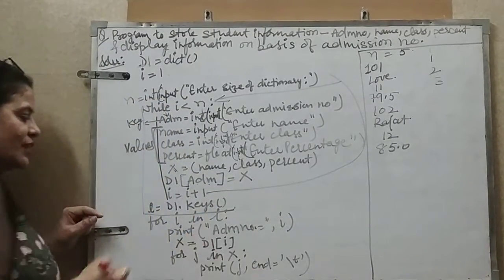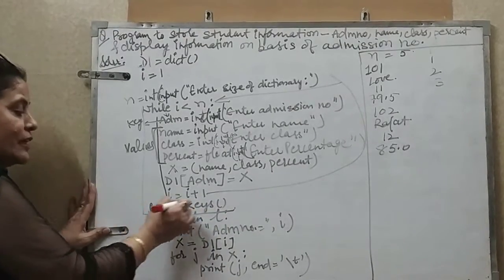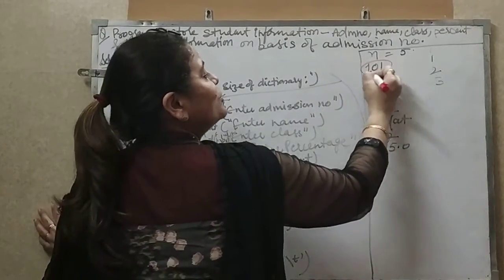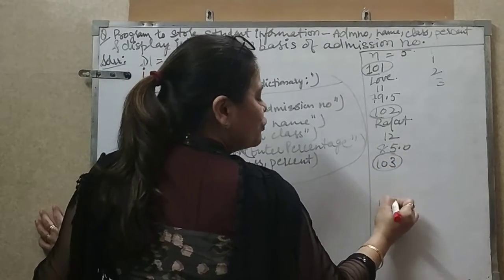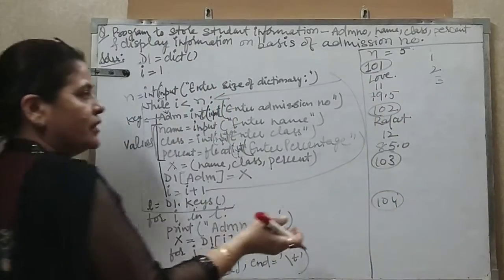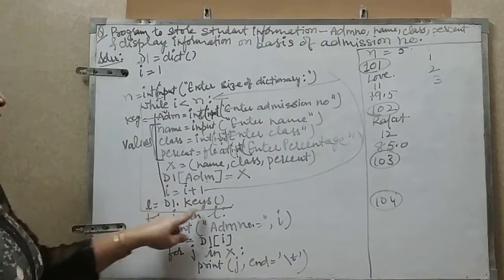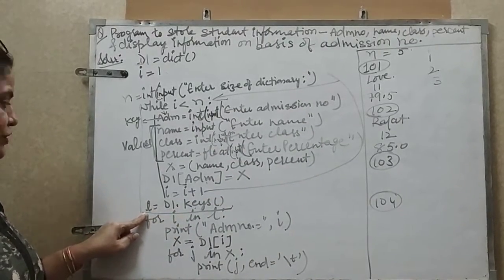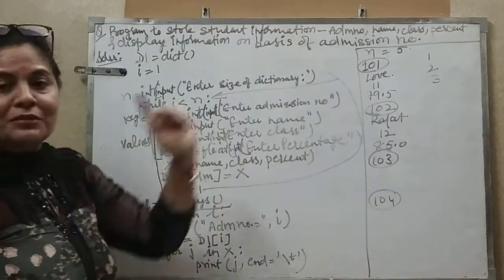That is L equals D1 dot keys function. L will contain all the keys of my D1. Suppose I entered my key as 101, 102, next key value 103, next key value 104. Till 4 it was working because 1 to 4 it will work. So all these are the keys: 101, 102, 103, and 104. According to the question I have to display the information on the basis of my admission number.